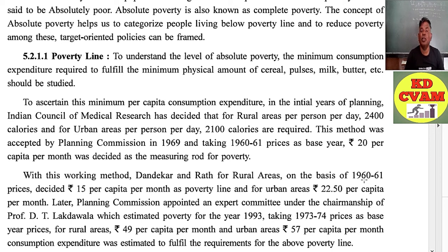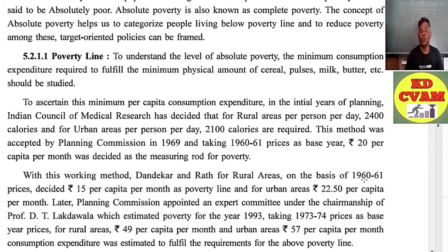This method was accepted by the Planning Commission in 1969, taking 1960-61 prices as the base year. Rupees 20 per capita per month was decided as the measuring rod for poverty. Dandekar and Rath, based on 1960-61 prices, decided rupees 15 per capita per month as the poverty line for rural areas and rupees 22.50 per capita per month for urban areas.